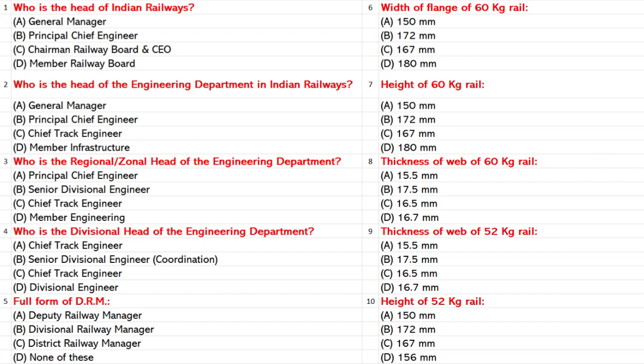Full form of DRM: A. Deputy Railway Manager. B. Divisional Railway Manager. C. District Railway Manager. D. None of these. Answer: B. Divisional Railway Manager.